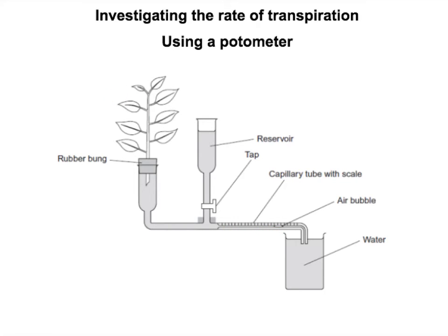As water is lost from the plant, it pulls on the water molecules behind it — because all the water molecules are joined by cohesion — and pulls the water along the capillary tube, moving the bubble along. The rate of transpiration can be calculated as the distance the bubble moves per minute. You can also convert that into volume by multiplying the distance by the cross-sectional area of the capillary tube, giving the volume of water lost per minute.